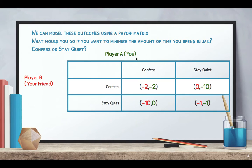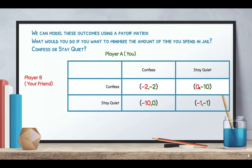Looking at Player A in green and the columns here — same situation, now modeled in this matrix. If you confess, your two options are go home with zero or spend two years in jail. If you stay quiet, you could spend one year or 10 years in jail. For Player B in red, if they confess, they spend two years if their partner confesses, or zero if their partner stays quiet. If they stay quiet, it's 10 years if their partner confesses versus one year if their partner stays quiet.